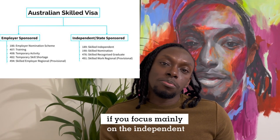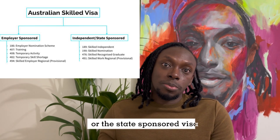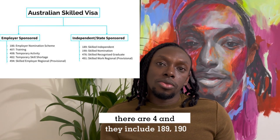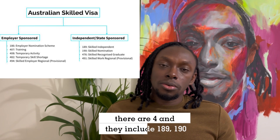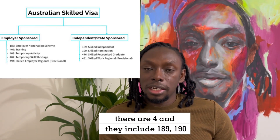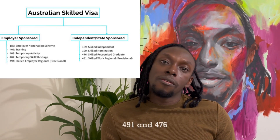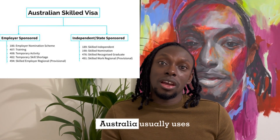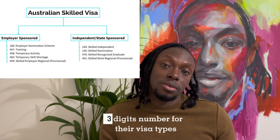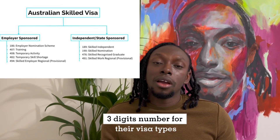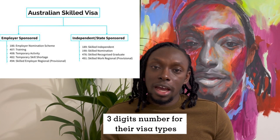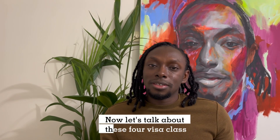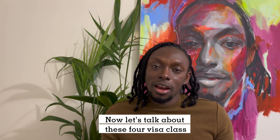If you focus mainly on the independent or state-sponsored visas, there are four: 189, 190, 491, and 476. Australia usually uses a three-digit number for their visa types. Now let's talk about these four visa classes.